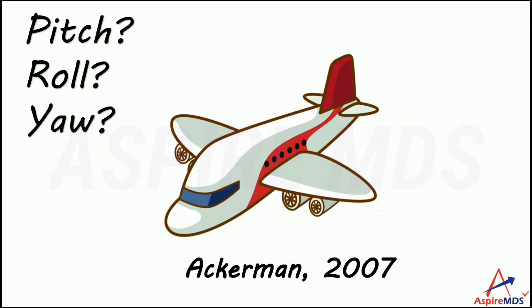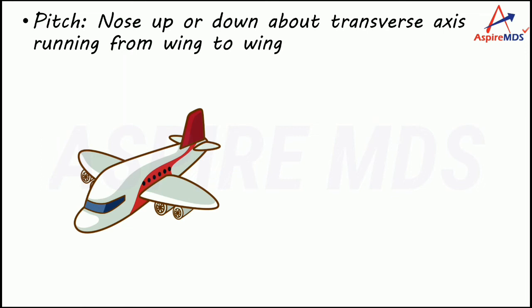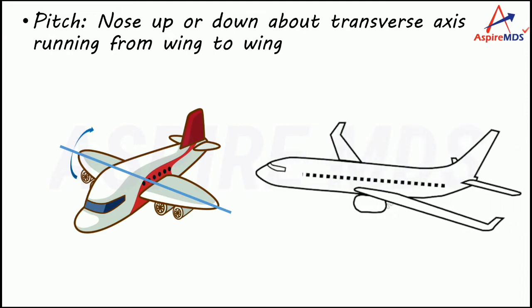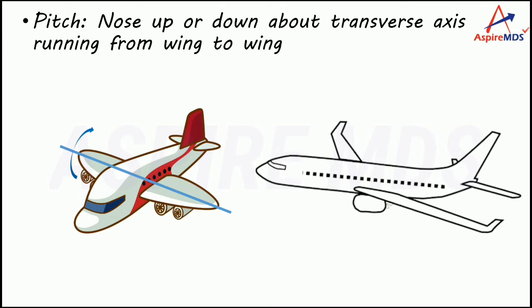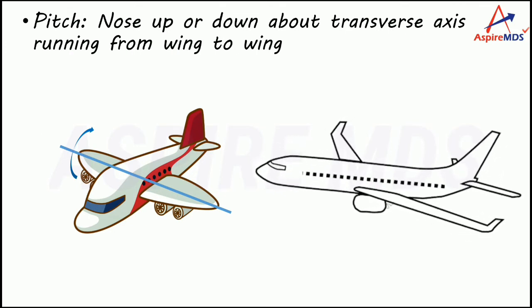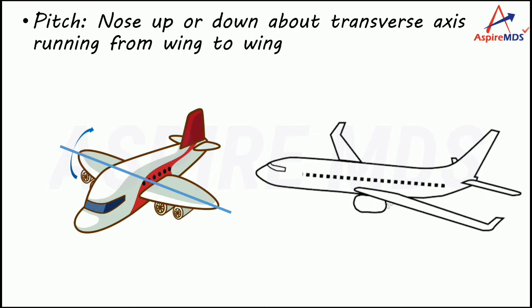Let's see them one by one. First is pitch. Pitch refers to the rotation of the aircraft around the axis passing from one wing to the other. If the aircraft rotates around this axis, the nose of the aircraft will move up and down.